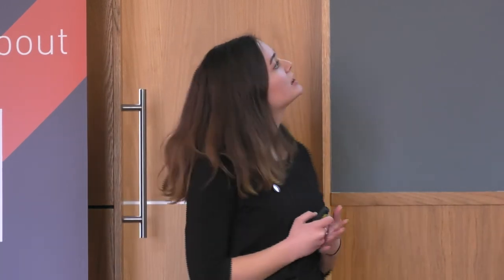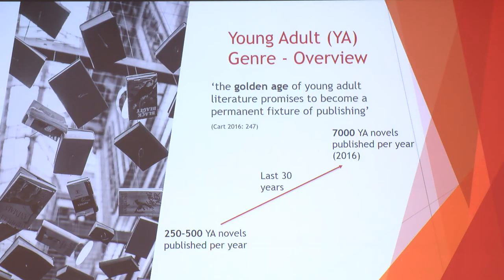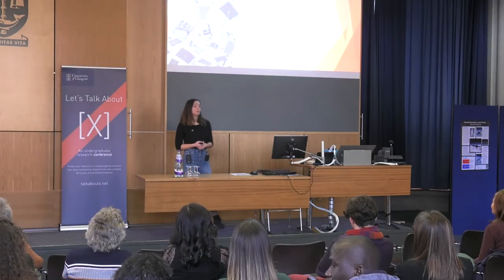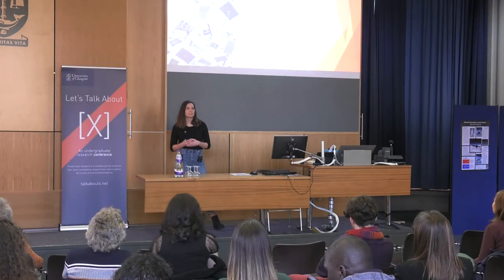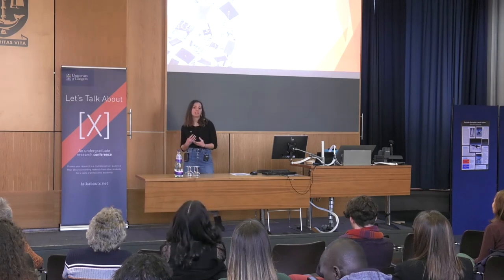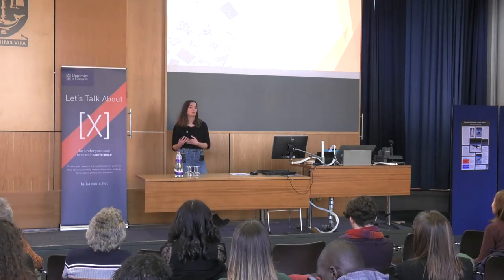YA is also very important right now because it's a genre that is growing. From about 400 YA novels published per year 30 years ago, it went up to 7,000 — and that's from 2016 data. So we can assume there are even more books being published per year now. As Cart says, the golden age of YA promises to become a permanent fixture. YA is incredibly important to the book industry and it's also a genre that's constantly changing, very experimental, with a lot more room to explore.